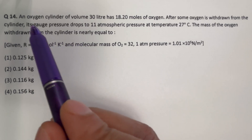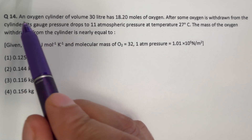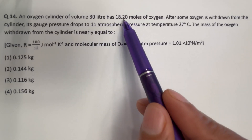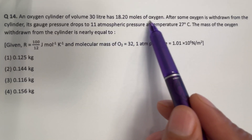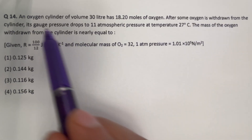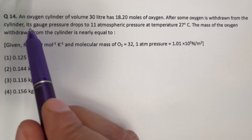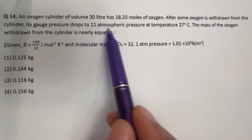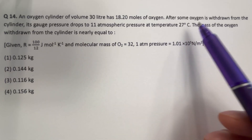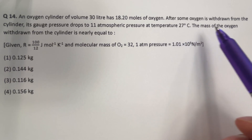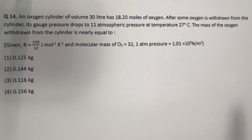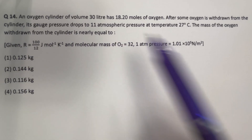Hello everyone, here is a question based on the mole concept. An oxygen cylinder of volume 30 liters has 18.20 moles of oxygen. After some oxygen is withdrawn from the cylinder, its gauge pressure drops to 11 atmospheric pressure at 27 degree Celsius. What is the mass of the oxygen withdrawn from the cylinder?